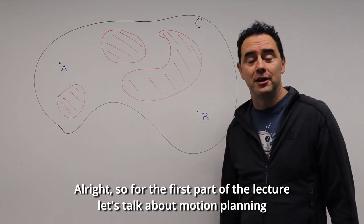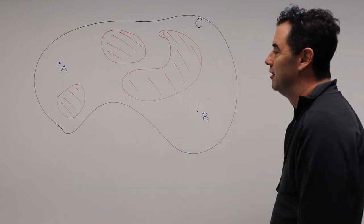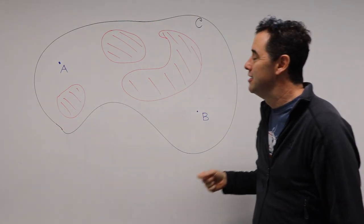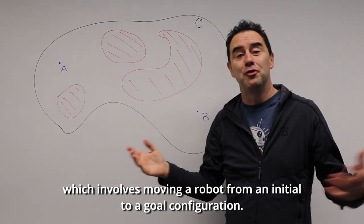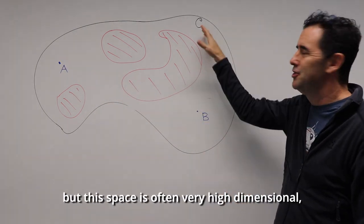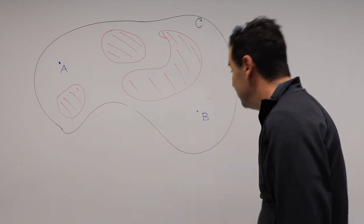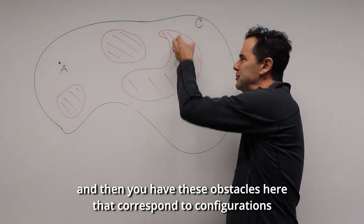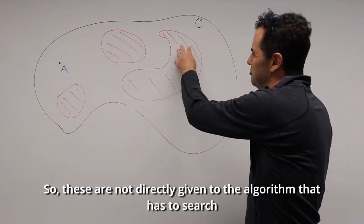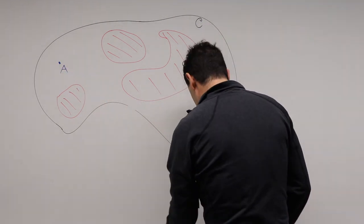For the first part of the lecture, let's talk about motion planning. Back in the early 1990s I got fascinated with the robot motion planning problem because it could very nicely be characterized as a kind of search in an abstract configuration space. The goal is simply to get from point A to point B, moving a robot from an initial to a goal configuration. The space is often very high dimensional — maybe four, five, six, ten, twenty, even a thousand — and you have obstacles that correspond to configurations that are in collision, not directly given to the algorithm.